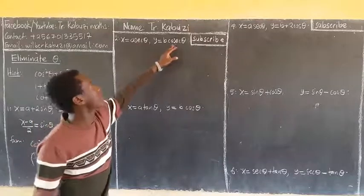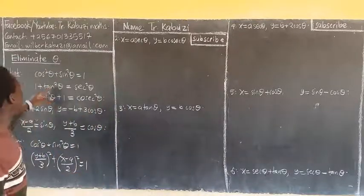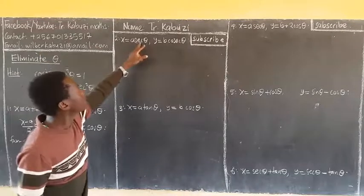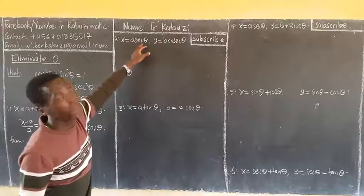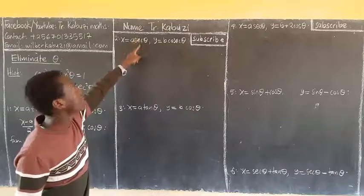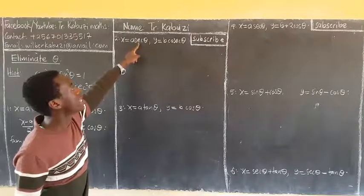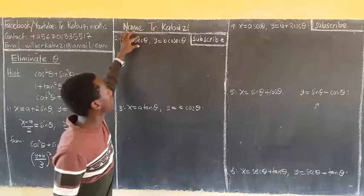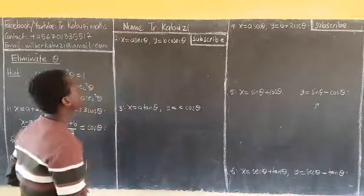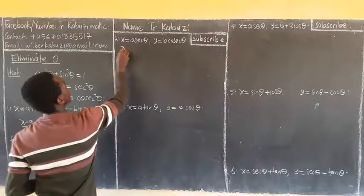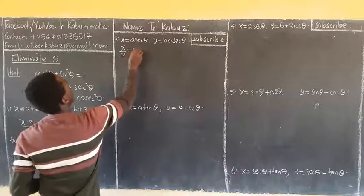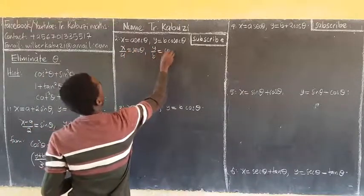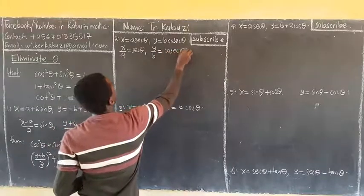When we come to this example, you recognize that it is having sec and cosec. You see that in sec there is cos, and in cosec there is sin. First of all, you make cosec the subject and sec the subject. From here, we get y over 3 equaling cosec theta.